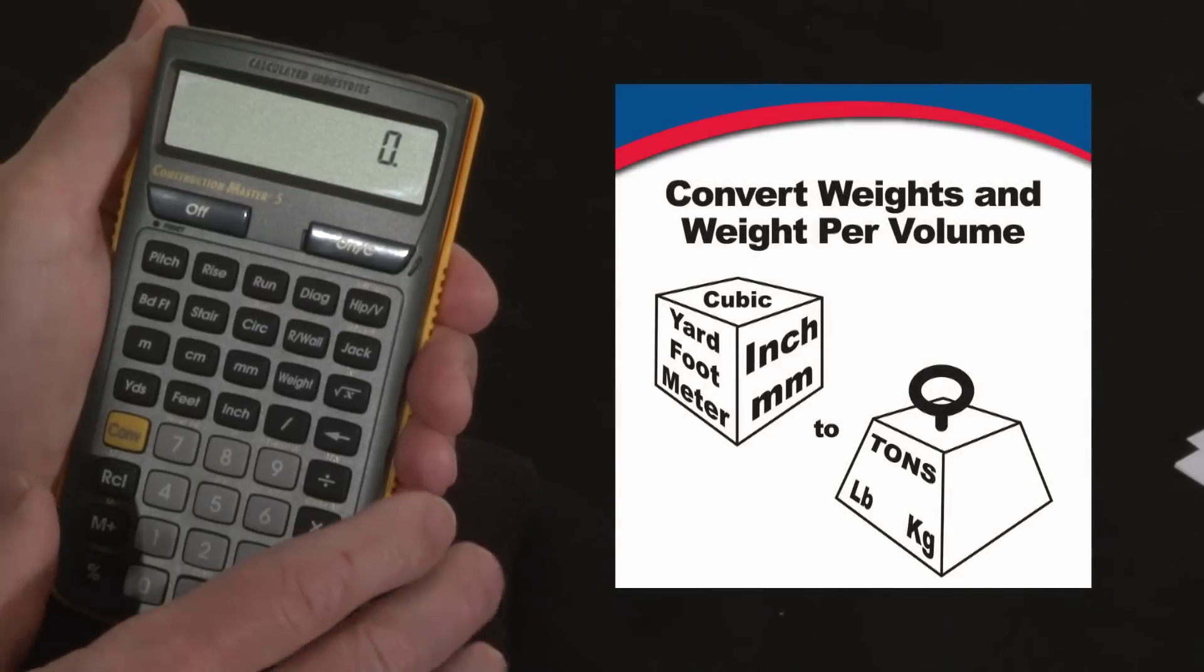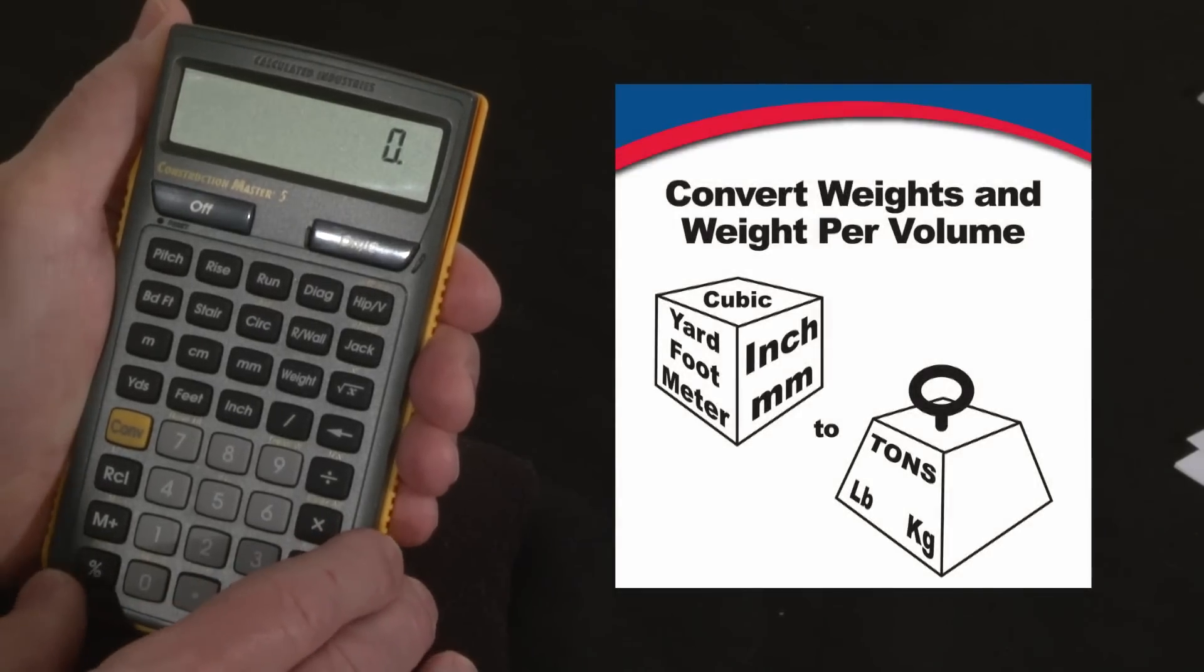Now let me show you how to convert weights and weight per volume on your Construction Master 5. Say you've got something that says it's 23 kilograms.